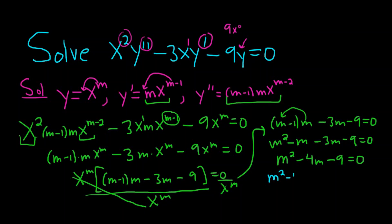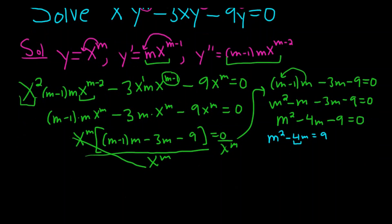So we have m squared minus 4m equals 9. Then what you do is you take the coefficient of m, divide it by 2, and square it. So negative 4 over 2 is negative 2. Negative 2 squared is 4. So you add 4 to both sides.